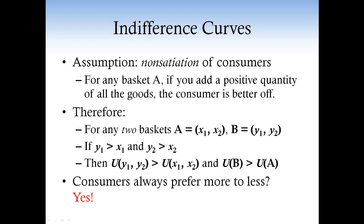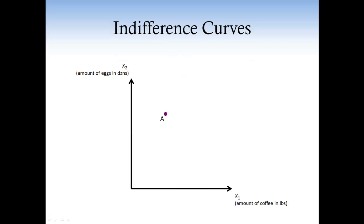Now, with this assumption, we know that given a basket A, all the baskets in the region to the northeast must give a higher utility to the consumer, and all the baskets in the region to the southwest must give a lower level of utility to the consumer. As a result, it is easy to understand why the indifference curve passing through A is a decreasing curve.